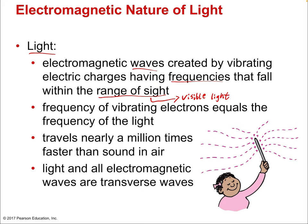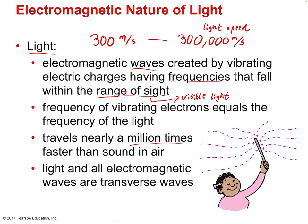The frequency of vibrating electrons equals the frequency of the light, just like the frequency of a vibrating sound wave inside a wind instrument equals the frequency of the sound it produces. Light travels nearly a million times faster than sound in air. Sound travels at about 300 meters per second, and light travels at about 300 million meters per second — a difference of a million. When we say the speed of light is absolute, that's entirely true. It has functionally different values traveling through things other than a vacuum — light effectively travels slower through water, or even slower through dense transparent materials like diamond. But the vacuum gaps between atoms always have light traveling at the same speed, because there's no other speed light can propagate. We discussed that in the electromagnetic induction concept in chapter 9.